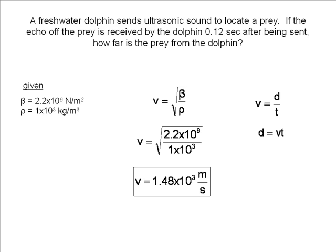Next we need to find the time. The time is given to us as the round trip time. We only want to find the time for half the trip. This will allow us to find our distance to the prey. We divide the time in half and get 0.06 seconds.